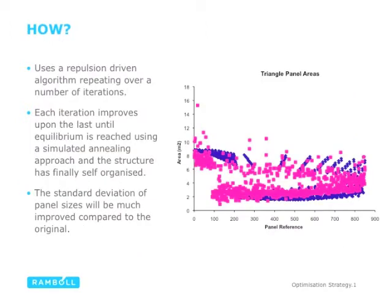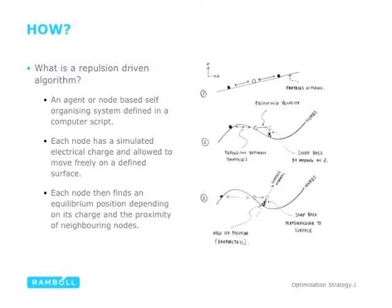How do we do this? We use a repulsion-driven algorithm which repeats and repeats until equilibrium is reached and the structure is self-organized. The standard deviation of panel sizes should be much improved compared to the original. Essentially, you place an electrical charge on each of the nodes in the classic node-and-bar structural model, and each node is allowed to find an equilibrium position depending on its charge and its proximity to neighbouring nodes.